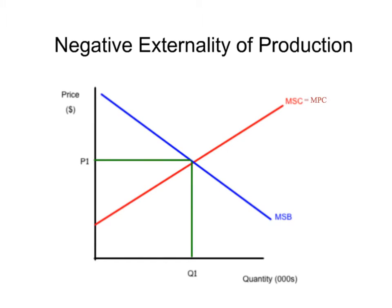This isn't that much different than the rule of 11 graph. You got the price, you got the currency, P1 — there should be a zero down here. You got your quantity, your Q1, your quantity in units, and it should say per year or something.